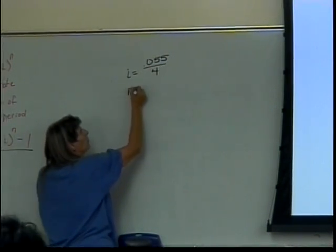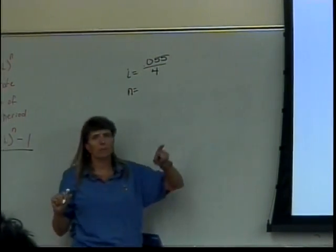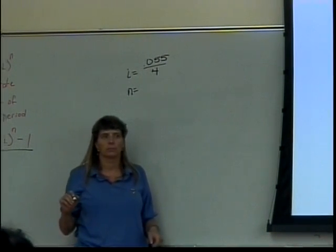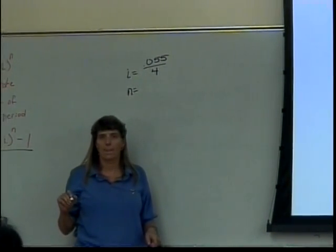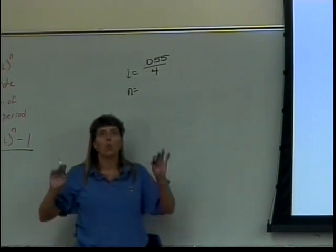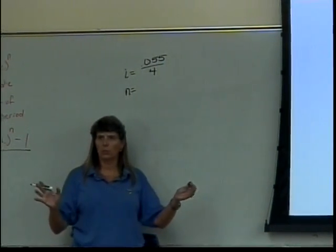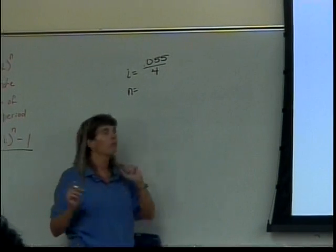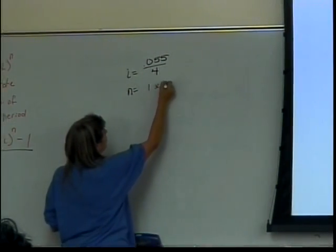What would N be for my 5.5% compounded quarterly? How many years are we talking about here? One. So how many quarters are there in one year? Four. So it would be 1 times 4, which would be 4.